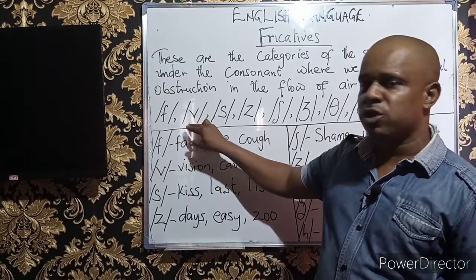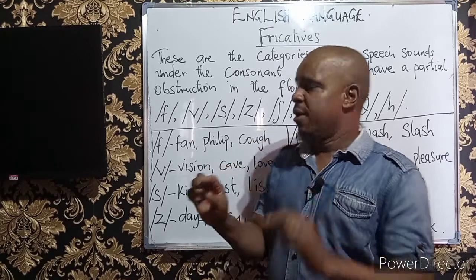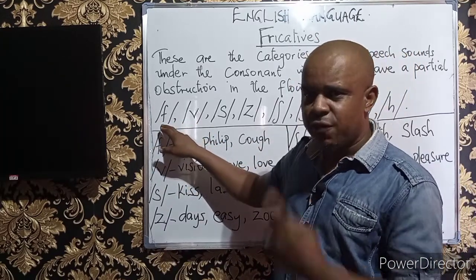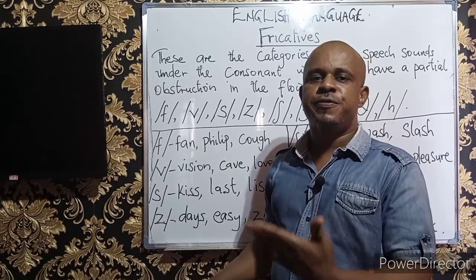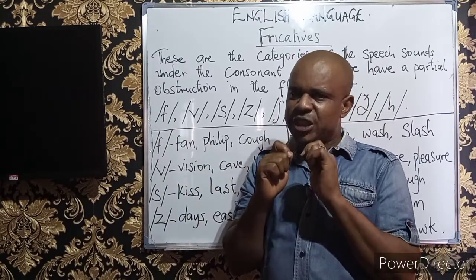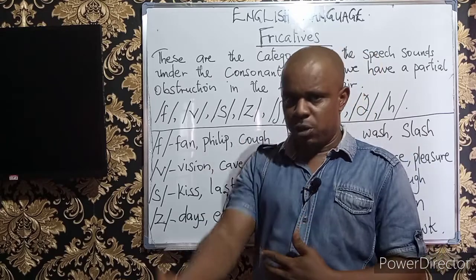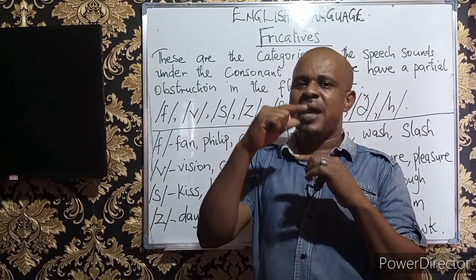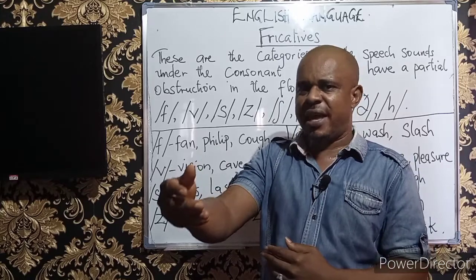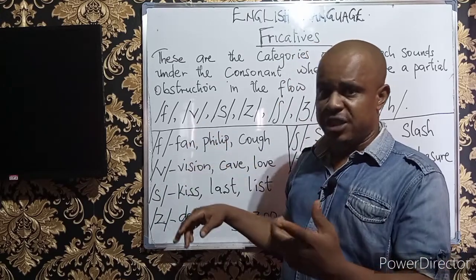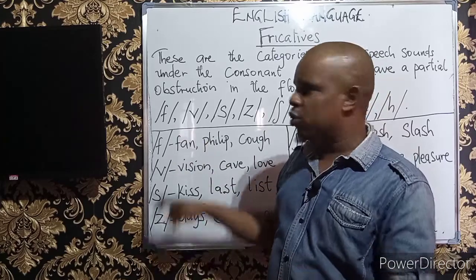If you observe the demonstration of the pronunciation of these two sounds, we notice the same pattern of articulation, but the slight difference is that while one is voiceless, the other is voiced. When you demonstrate this sound, you notice a kind of partial obstruction — that's number one. Number two, the sound is voiceless. When I say partial obstruction, the upper lip and the lower lip are almost coming together to block the free flow of air — that's why it is partial.